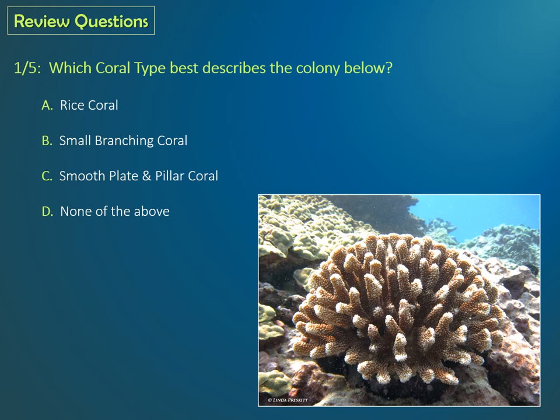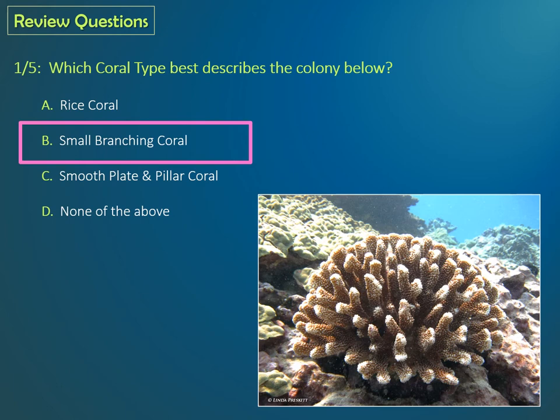Question one: Which coral type best describes the colony below? Is it A, rice coral? B, small branching coral? C, smooth plate and pillar coral? Or D, none of the above? If you selected B, small branching coral, you're correct.